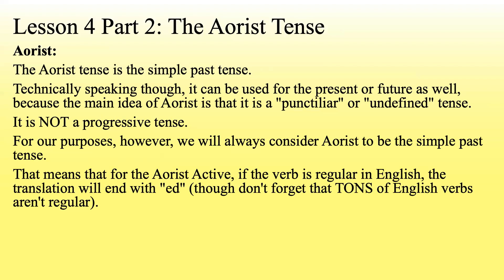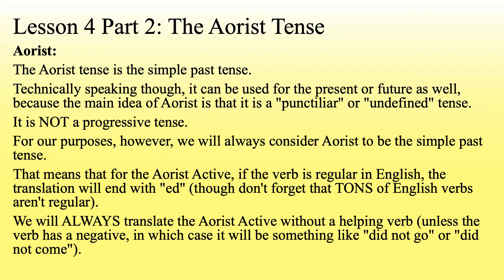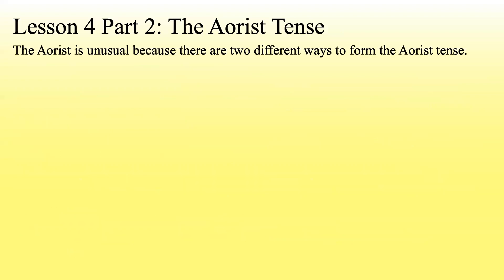For the aorist active, if the verb is regular in English and not something irregular, the translation will end with "-ed." No helping verbs — nothing extra — just "-ed." We will always translate the aorist active without a helping verb, unless the verb has a negative, in which case we'll end up with something like "did not go" or "did not come." But assuming it's not negative or a question, we're always going to translate it without a helping verb.